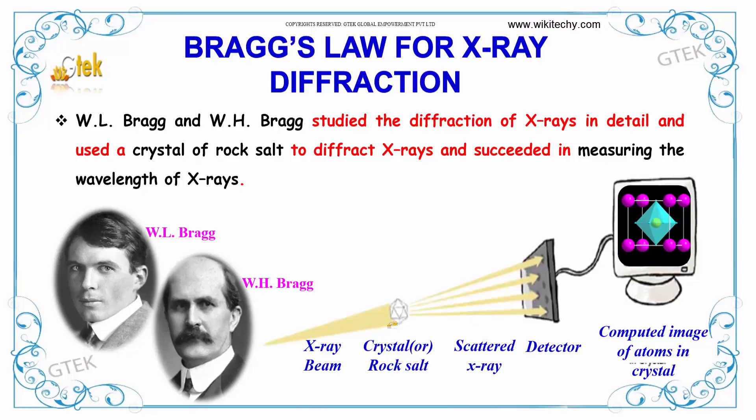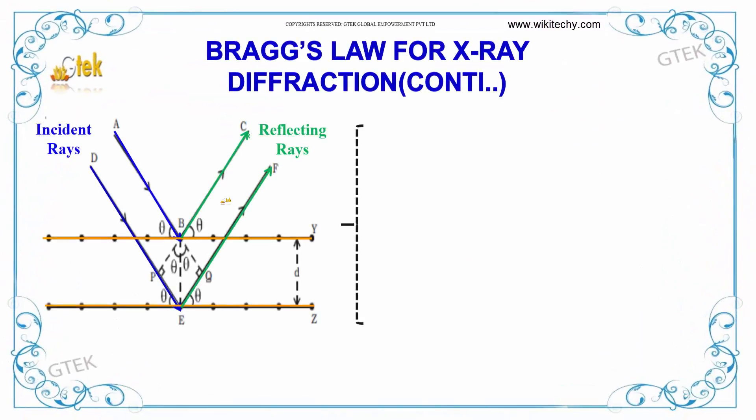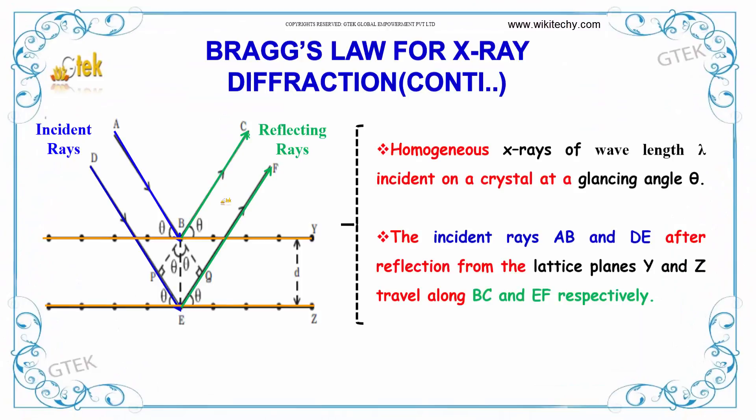The X-ray beam passing through the crystal of rock salt got scattered. It is detected and the computed image of atoms in the crystal is formed. From there, you are able to identify the wavelength of X-rays. They use a special device as Bragg's spectrometer.